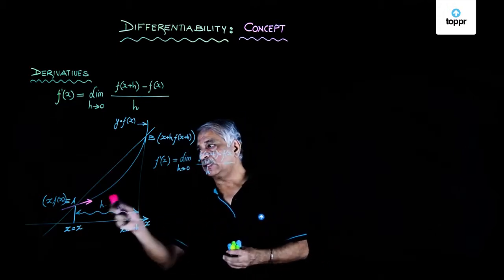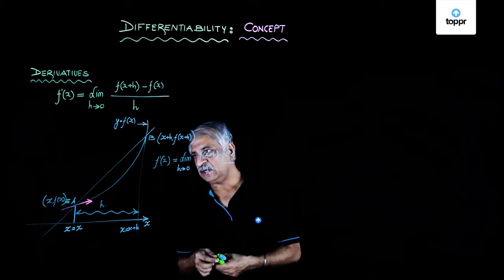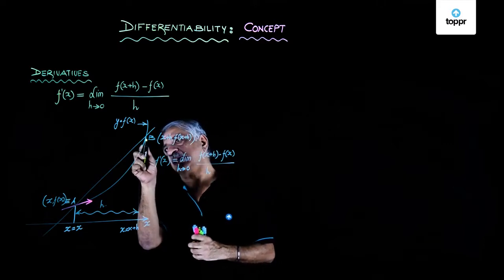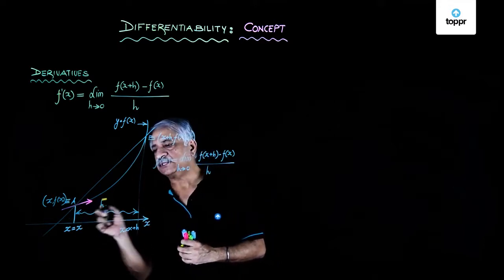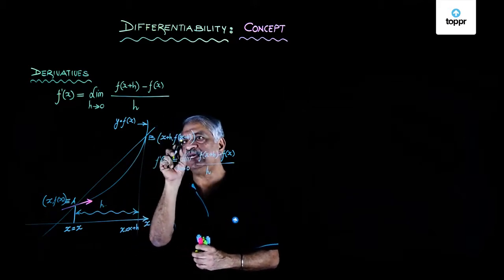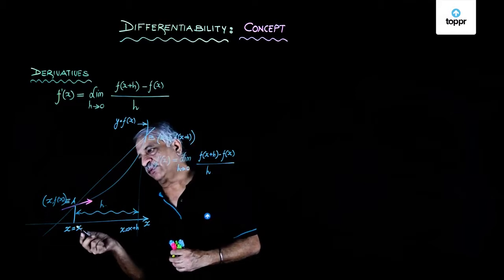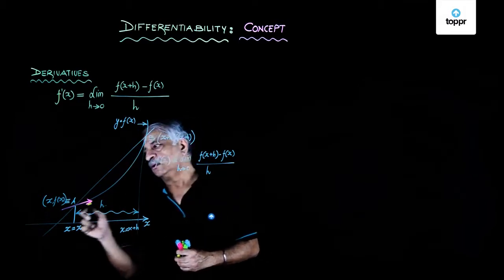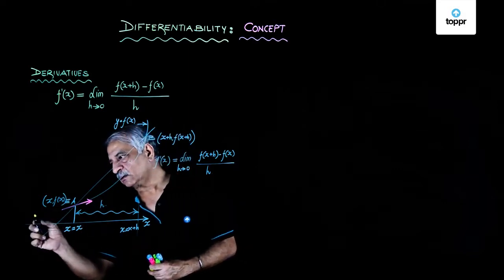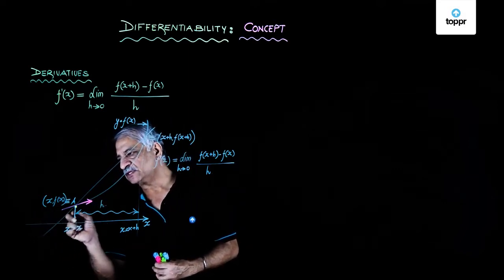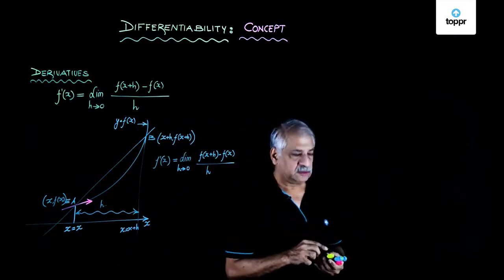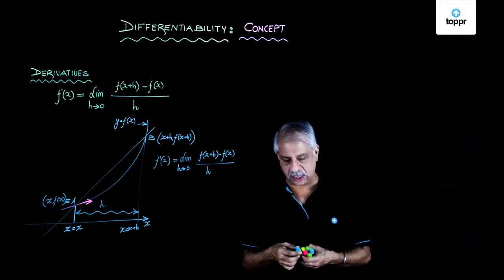While doing this particular derivation, we never thought that why are we only taking B on the right hand side of point A. We are saying this x+h and f(x+h). In actual practice, I can have B on the left hand side of A, and B can approach A from the left hand side also. Now this is where the concept of differentiability comes in.